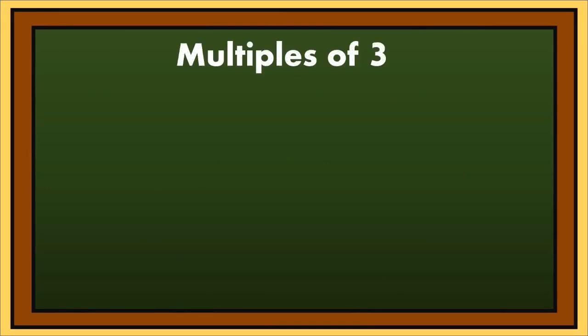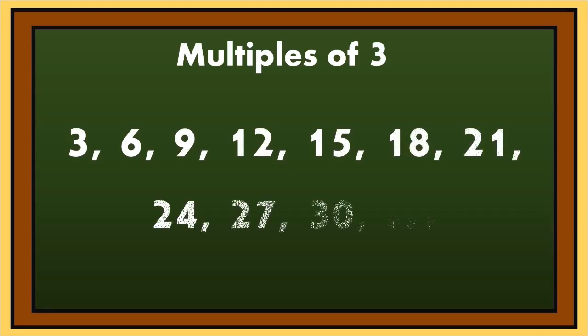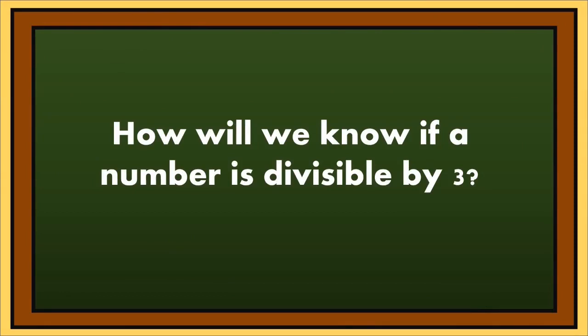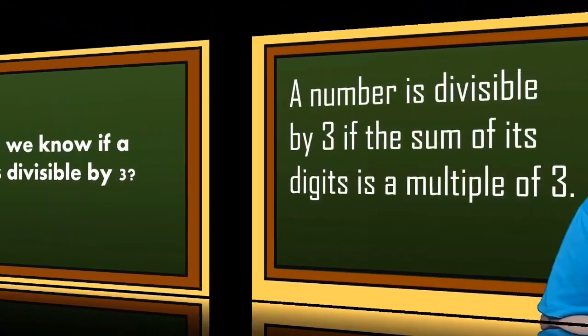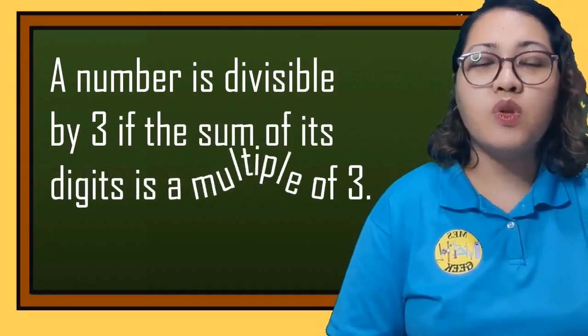Before we start talking about divisibility rules for 3, let's recall the multiples of 3. The multiples of 3 are 3, 6, 9, 12, 15, 18, 21, 24, 27, 30, and many more. How will we know if a number is divisible by 3? A number is divisible by 3 if the sum of its digits is a multiple of 3.